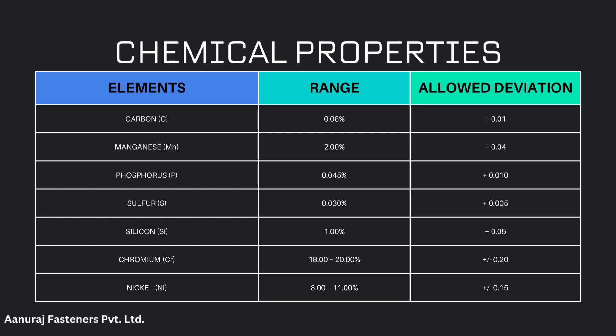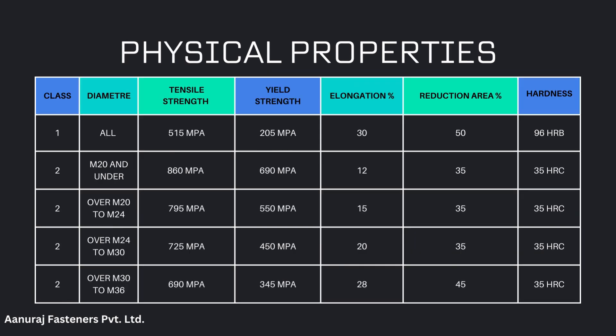The chemical elements are: carbon 0.08% maximum, manganese 2.0%, phosphorus 0.045% maximum, sulfur 0.03% maximum, silicon 1.0% maximum, chromium 18 to 20%, and nickel 8 to 11%.